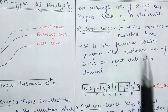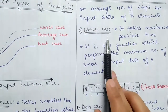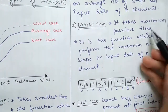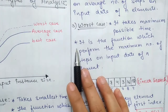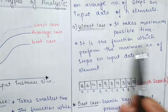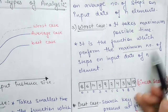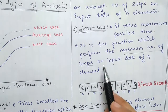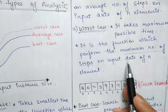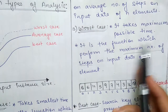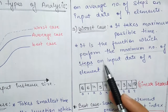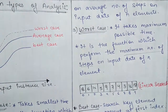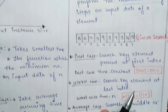The last one is worst case. Worst case takes the maximum possible time. It is the function which performs the maximum number of steps on input data of n elements. So when we take the maximum number of steps, that is our worst case. Now we will explain these concepts with a basic example of linear search.